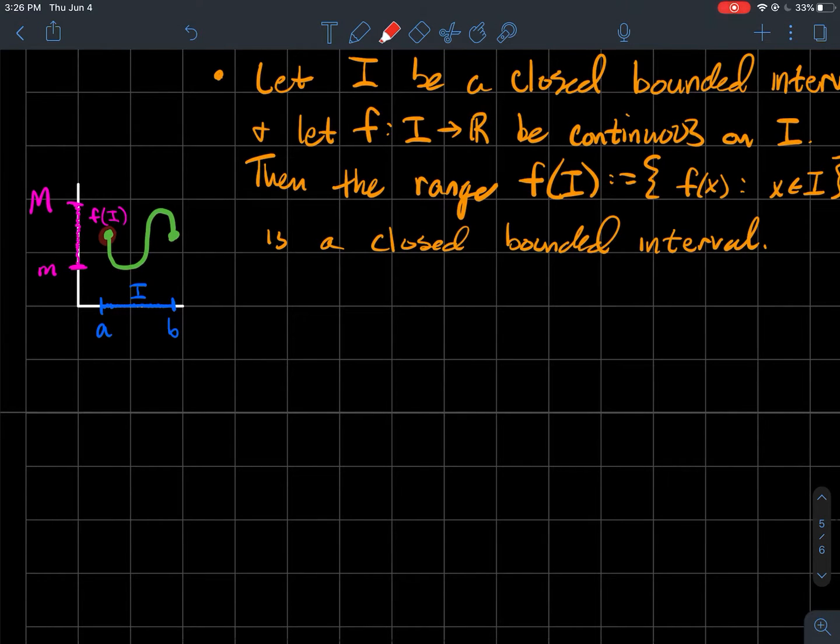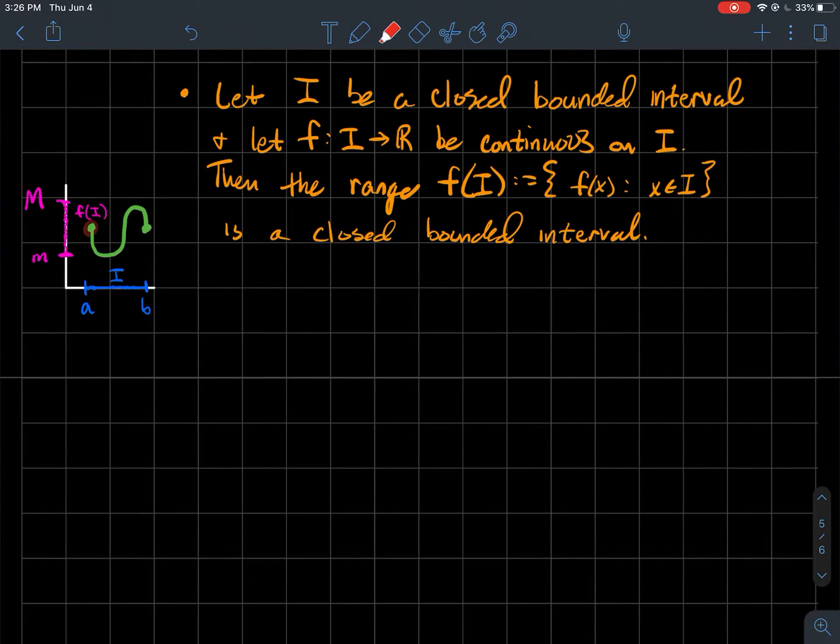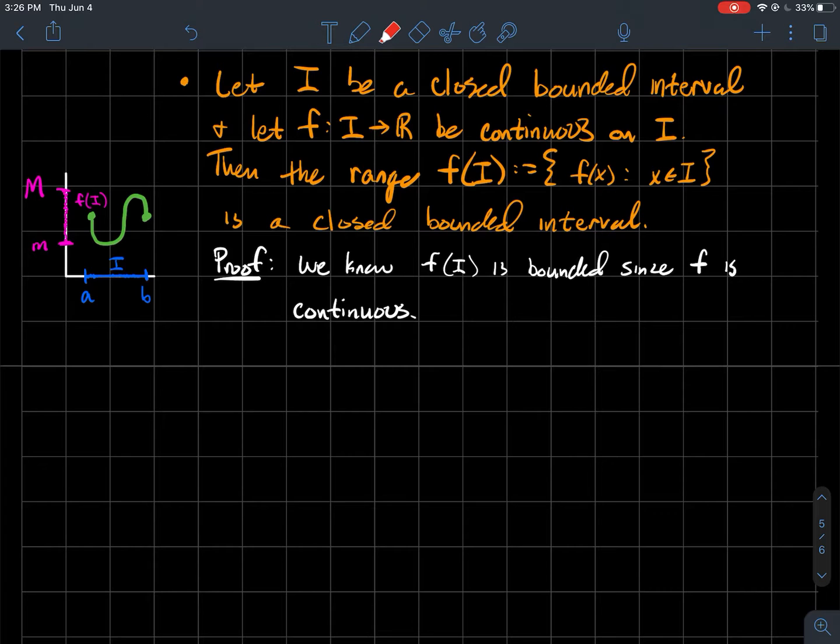It's just trying to say that closed bounded intervals get sent to closed bounded intervals by continuous functions. So what's the proof? We know that f(I) is bounded since f is continuous. Then if I've got a bounded subset of the real line, I can talk about the infimum and supremum of that set. So I'll let little m be the infimum of the range and capital M be the supremum of the range.